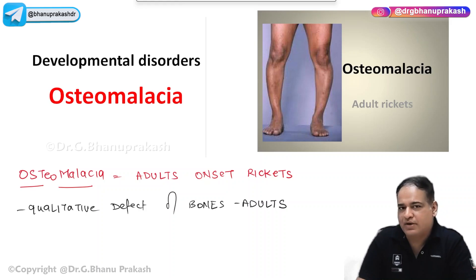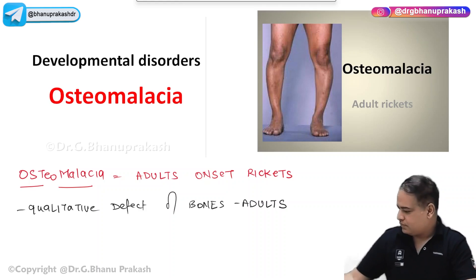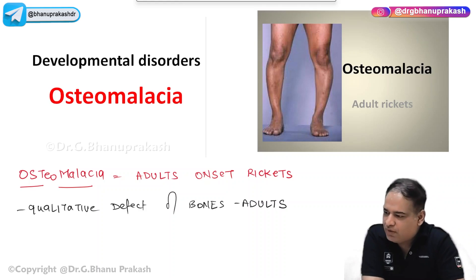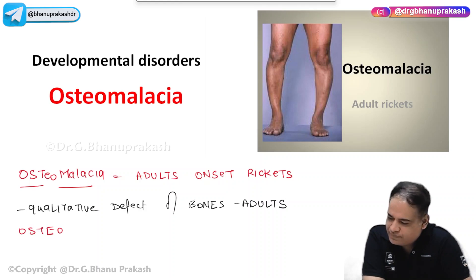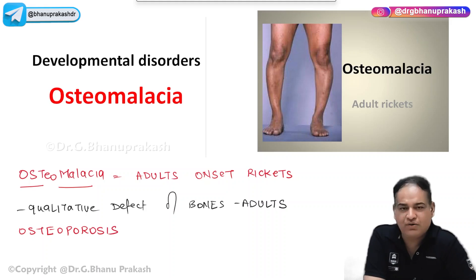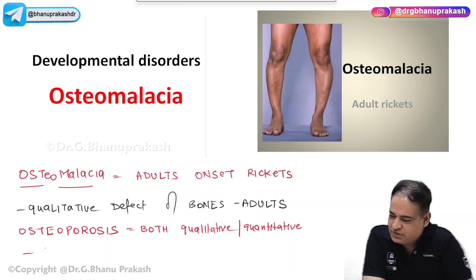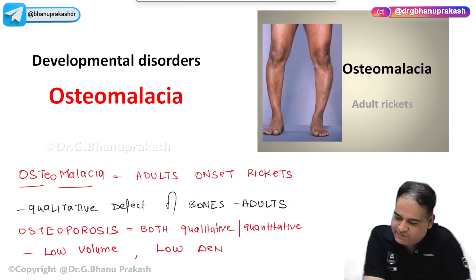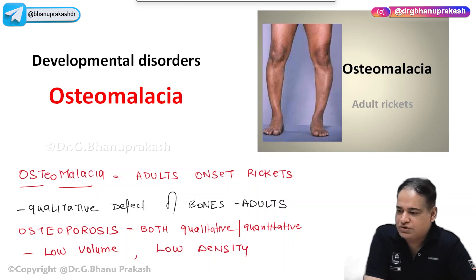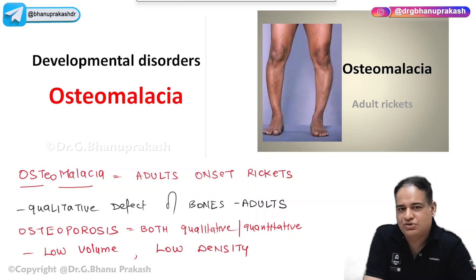When you compare osteomalacia with osteoporosis — another bone disease prevalent in adults — osteoporosis is both a qualitative and quantitative defect. In osteoporosis, bones have both low volume and low density, whereas in osteomalacia, the bone density is low but the bone volume is normal. That is the major difference between osteomalacia and osteoporosis.